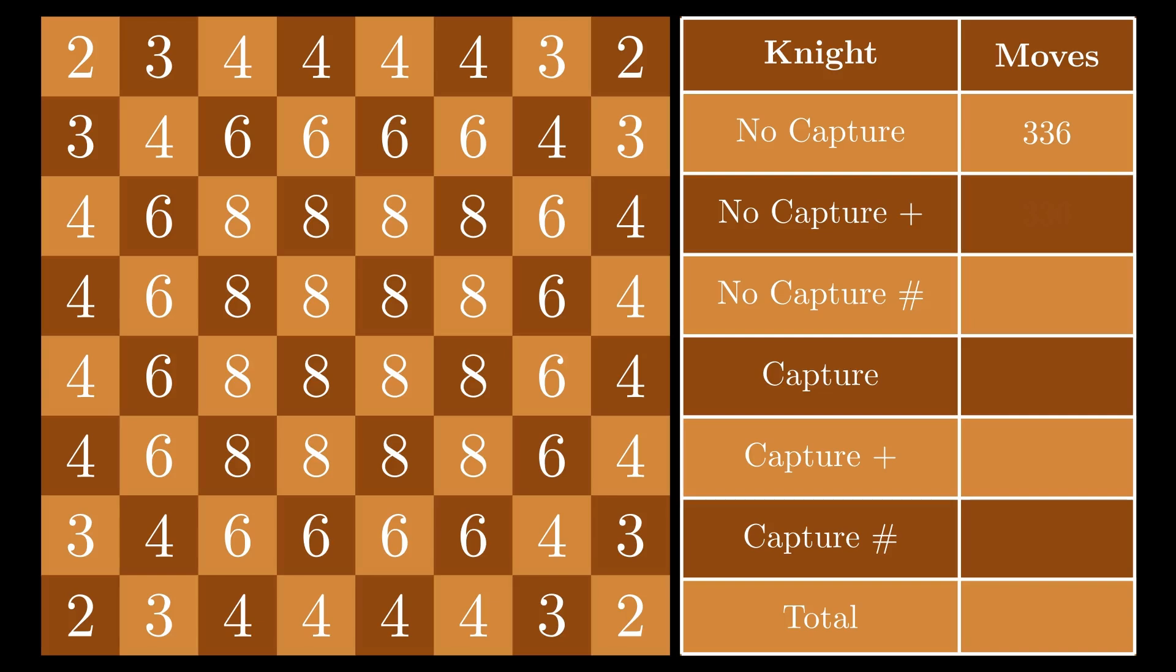What we saw for the pawns remains true for the knight, and the check and checkmate totals are the same. Unlike the pawns, the capturing ability of the knight does not depend on where it is found on the board, so 336 moves applies when involving captures, bringing the grand total of knight moves to 2,016. This highlights what I need to do for the remaining pieces. Simply find the number of no capture moves and multiply by 6.